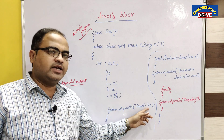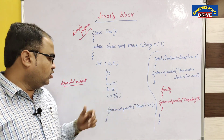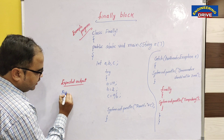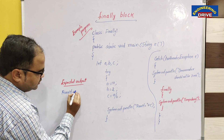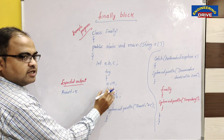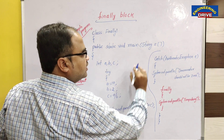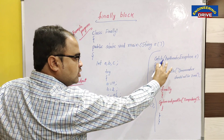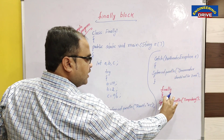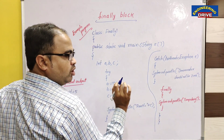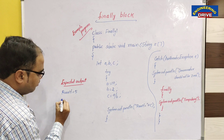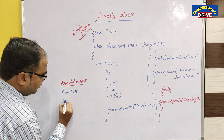First case: result is equal to 5 because there is no exception. Without exception we will get the output result is equal to 5. As there is no exception, control will not go to the catch block — it will skip the catch block. Then control will enter the finally block, and the statement I have written there is 'compulsory', so I will get 'compulsory' as output.